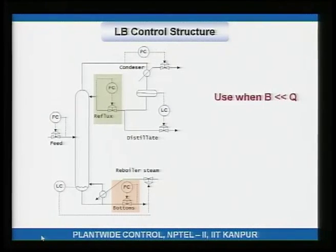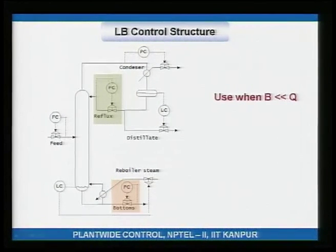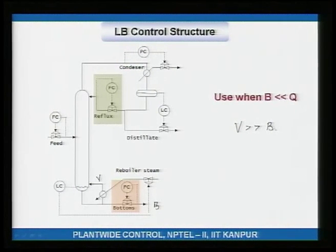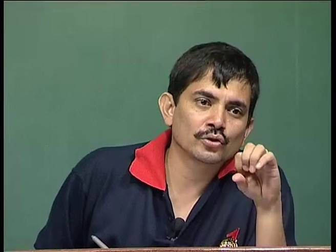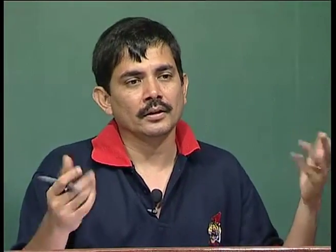The LB control structure has the reflux drum level controlled by the distillate flow rate. At the bottom, the bottoms stream flow rate is very small compared to the reboil V, meaning V is much greater than B. With respect to the reboiler, the bottoms stream is like a leak, and you cannot expect a leak to regulate a level.